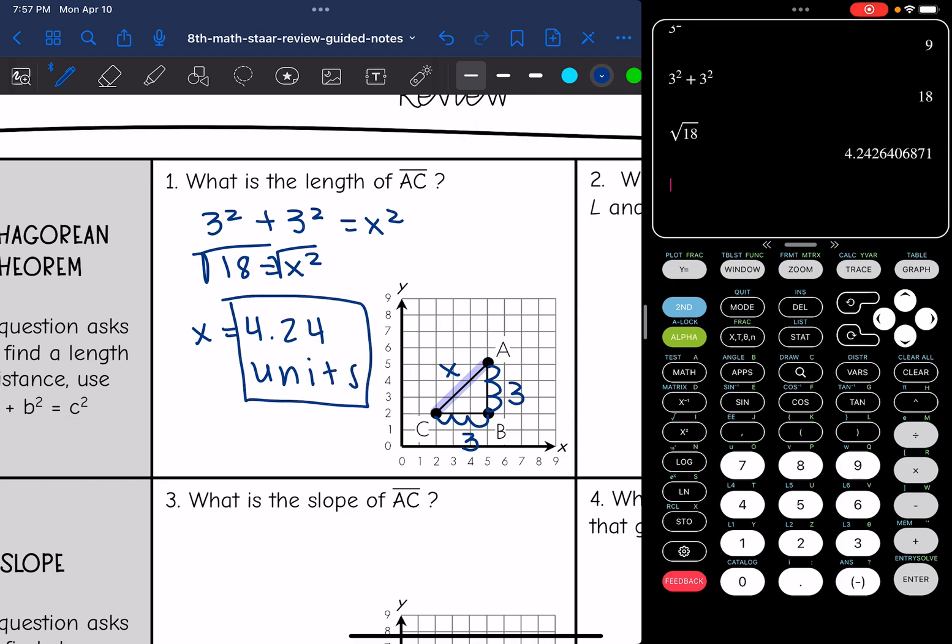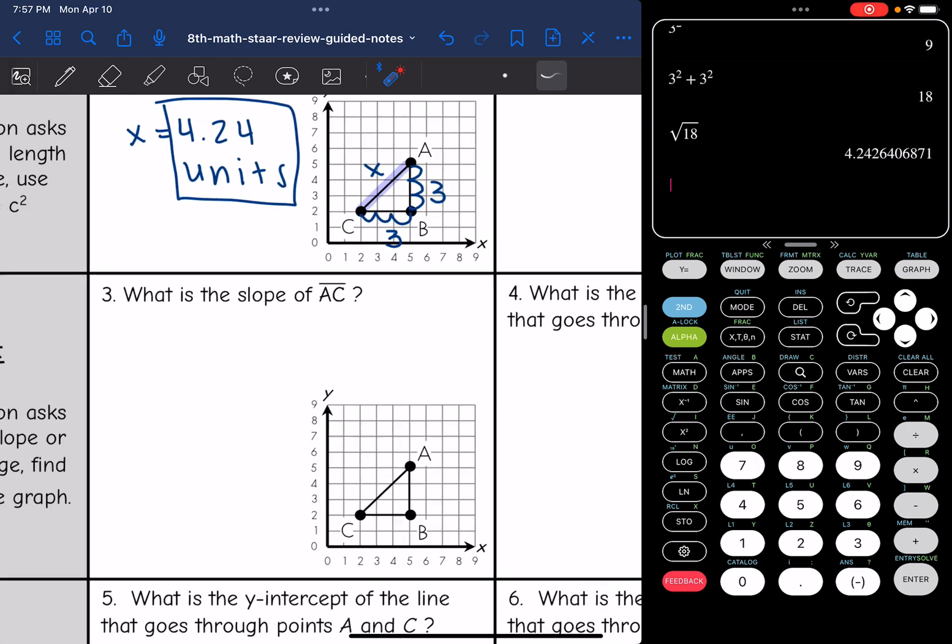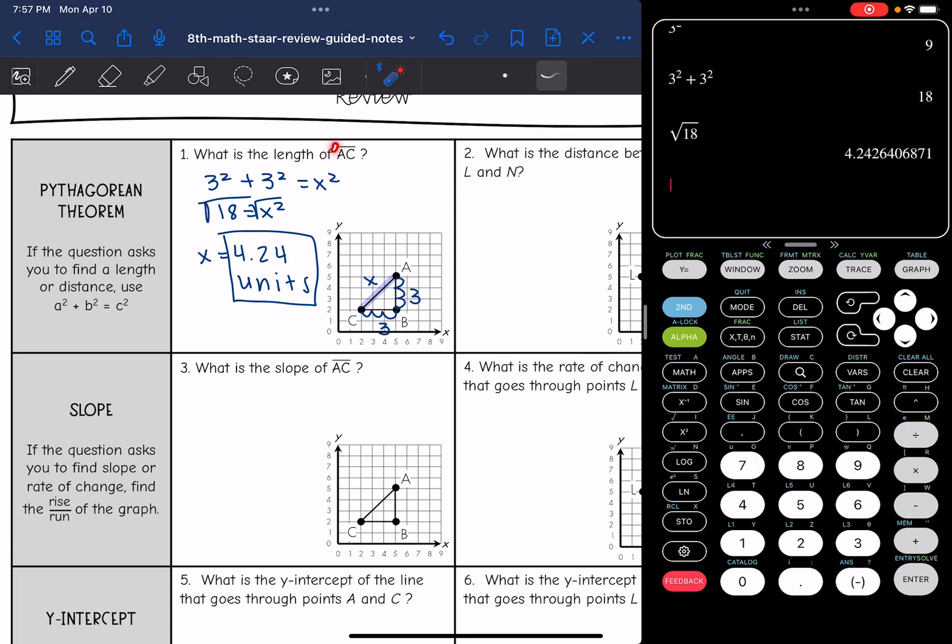Another thing they could ask you with this same picture is the slope. If they're asking you for slope or rate of change, you want to find the rise over the run of the graph. Look how similar it looks; all they are asking you to do is find the slope instead of the length.